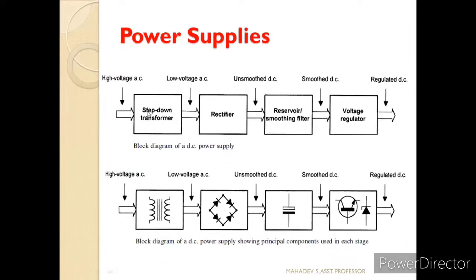In the step-down transformer, this is the transformer symbol, which converts from high voltage to low AC voltage. Rectifiers are of different types; here we are showing a bridge rectifier where the diodes are connected in a bridge format. The output of this bridge network is given to the smoothing filter — here we are using a capacitor for filtering. The output is then given to the regulator, which is a zener diode or transistor circuit. Here we use the zener diode to maintain a constant DC power supply, producing the constant DC voltage required for the electronic circuit from the household AC voltage.